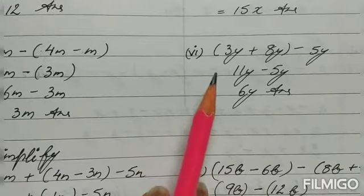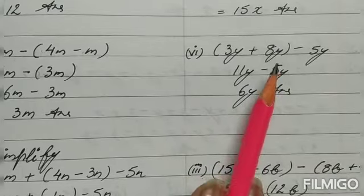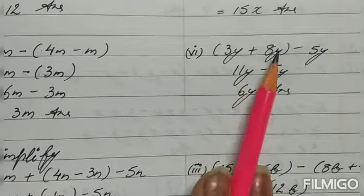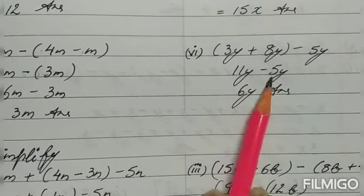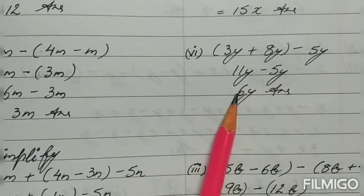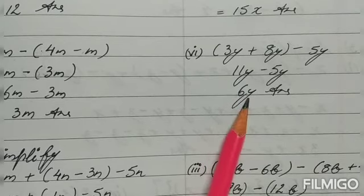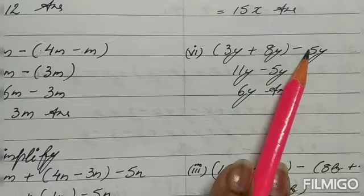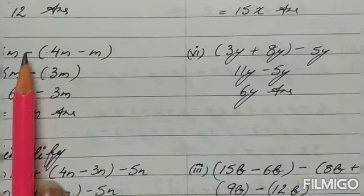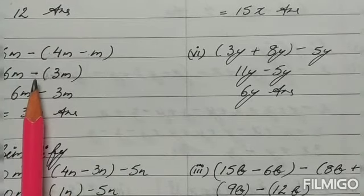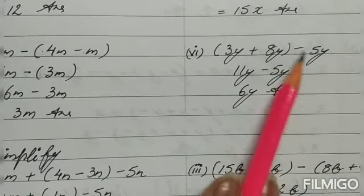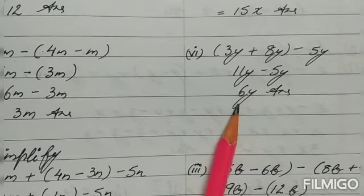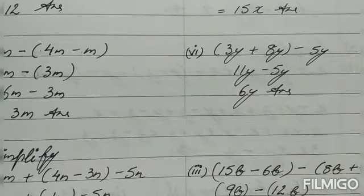The fourth subpart: 3y plus (8y minus 5y) outside the bracket. Solve the bracket first: 8 plus 3 equals 11y, minus 5y gives 6y. An important point: if a minus sign is outside the bracket but it is after the bracket, it will not affect the sign inside — the sign will remain the same.